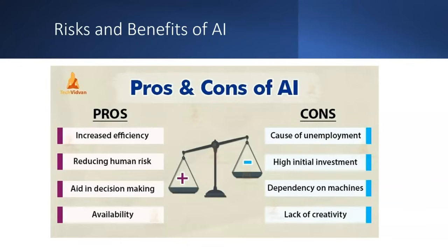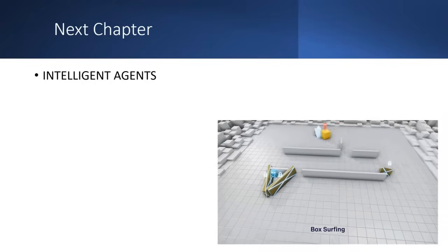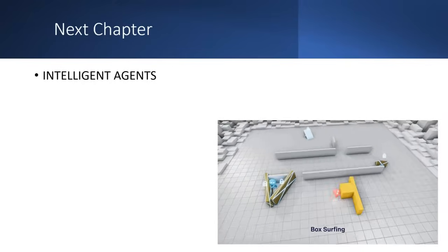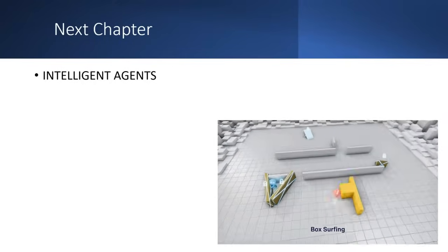Since there are benefits, there are risks as well, and that's why we need responsible AI. Pros include increased efficiency, reducing human risk, and decision availability. Cons include causing unemployment, high initial investment, dependency on machines, and lack of creativity. See you in the next chapter, which is about intelligent systems.